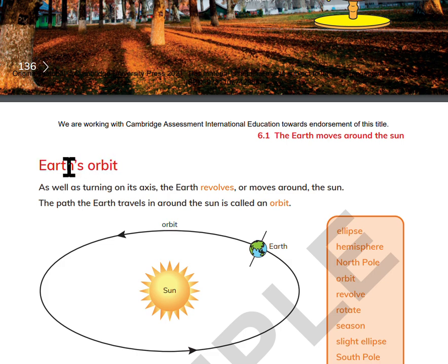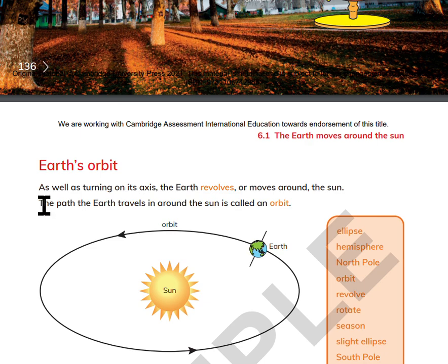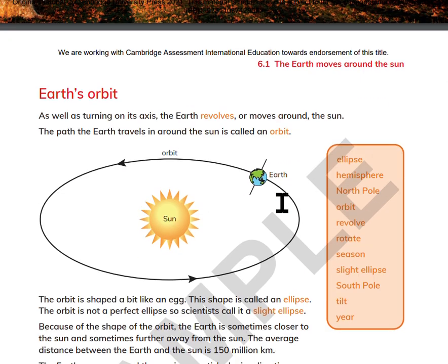Earth's orbit. As well as turning on its axis, the Earth revolves and moves around the Sun. The path the Earth travels around the Sun is called an orbit.